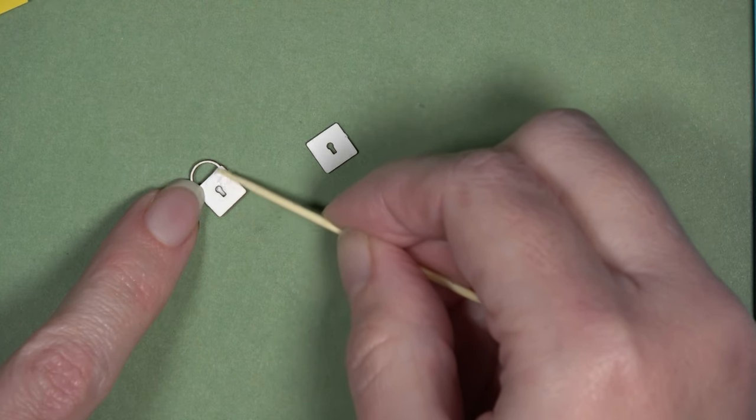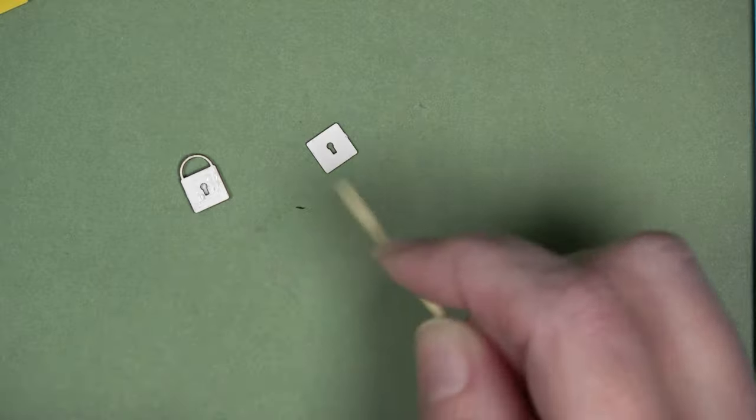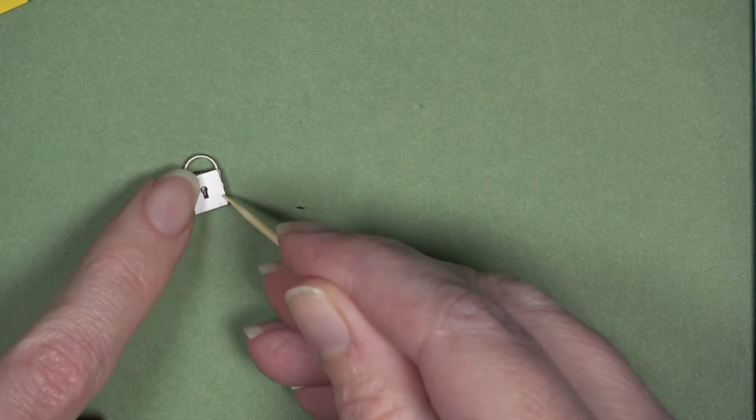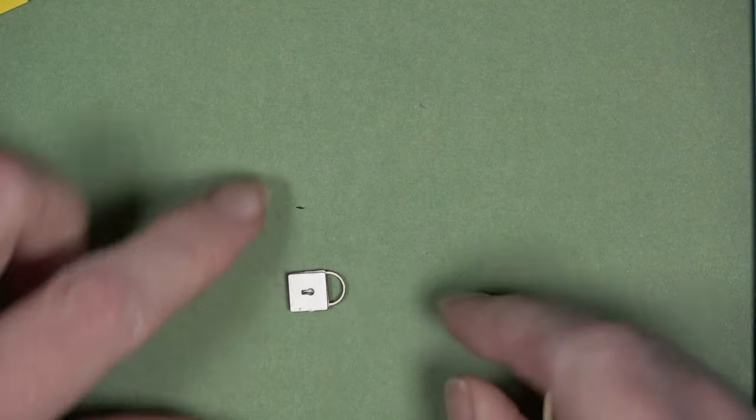Now I can add glue to the face of the pieces that were in section two and add the pieces that were in section three on top of that to complete my lock.